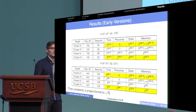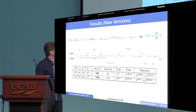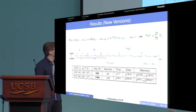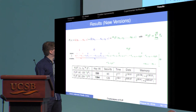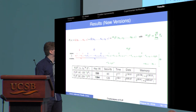We communicated these results to the designers of FLIP, and they changed the cipher to resist our attack. Basically they changed the filtering function — they didn't change the linear or quadratic part, but they put in more of the so-called triangular functions. They also put in much bigger keys. Now for the 128-bit security version, the key is 1394 bits long, and as you can see in the table, the attack is not possible anymore.